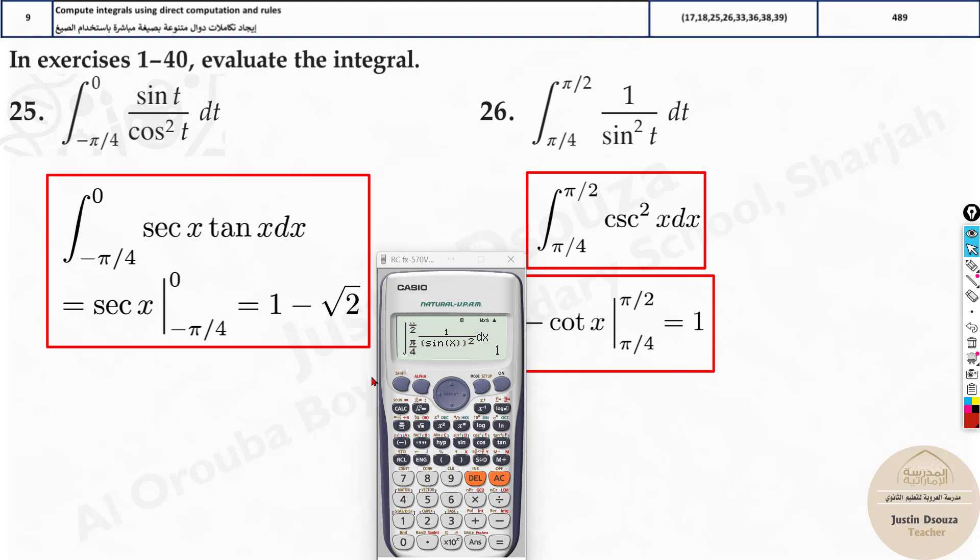Now what happens over here? Let's do the left side one as well. Same thing - integral. Here you need to use the fraction symbol. Sin, sorry, it's sin x, close the bracket. Divided by cos squared x - open the bracket, you need to put cos x, and again close the bracket and square it up. And what are the limits? It's negative pi by 4. So it's pi divided by 4 and until 0. So here it will be 0.